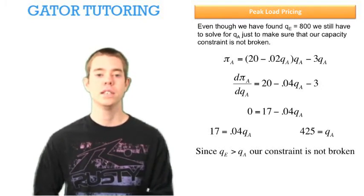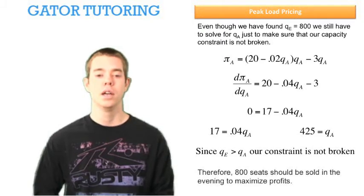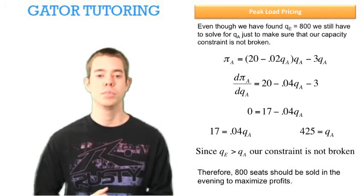Since QE is indeed greater than QA, our constraint is not broken, and therefore 800 seats should be sold to maximize profits in the evening.